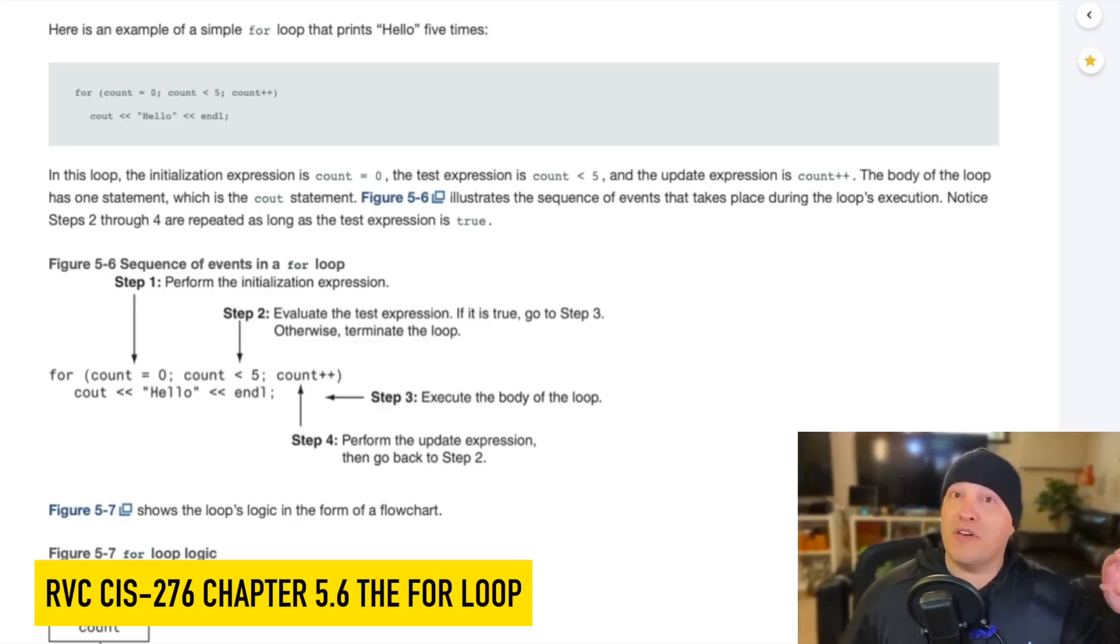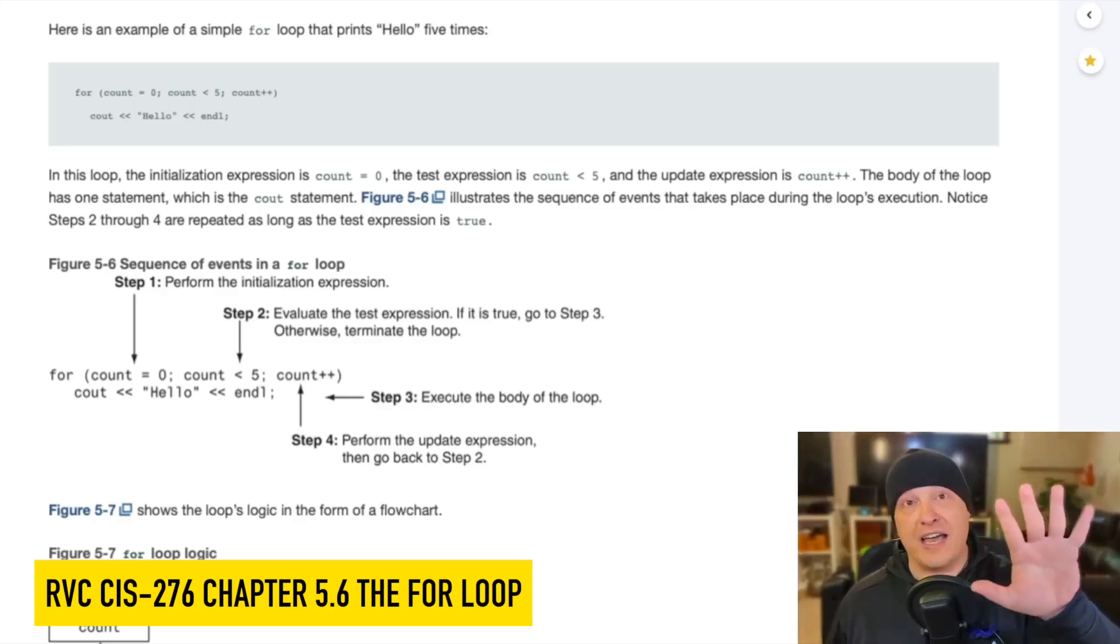We have our evaluation expression. Count is less than five. So this loop is going to iterate five times. Now, I know that you're looking at that, and you're saying, less than five, Eric, that's less than five. You're right. It would be if we didn't start at zero. So just to do it laboriously one time, start with me here.